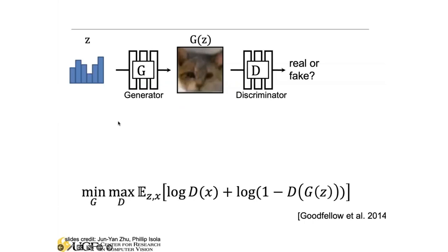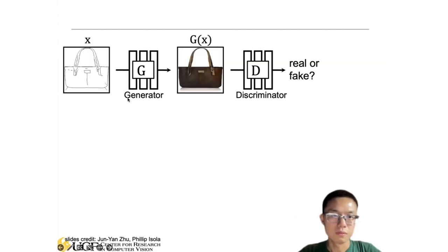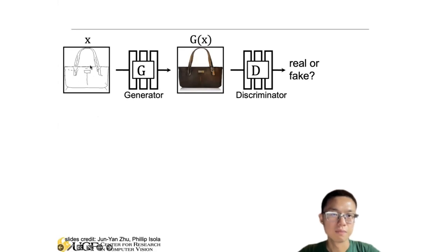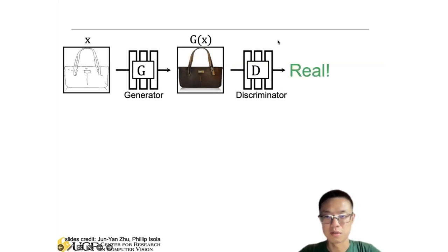So how do we achieve this? If we are still using the GAN network, we've only considered using the noise Z as the input to the generator to generate some image GZ. Then we use the discriminator to differentiate if this is a real image or a fake image. So if we're doing sketch-to-image translation using the vanilla GAN, what we do is we feed this input X into the generator. It will generate an image, and the discriminator may say this is a real image because visually this is very plausible.